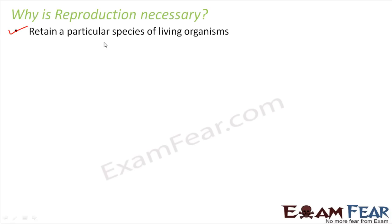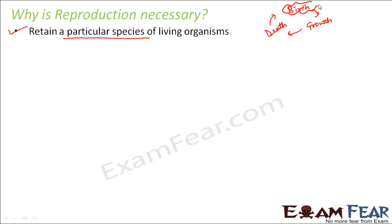However, reproduction is required for the survival of the entire species. If we want to retain a particular species, then reproduction has to happen. If all human beings stopped reproducing and no more human babies were born, what will happen? All those human beings existing today are not going to exist forever — there is this cycle of birth, growth, and death. If human beings are not reproducing, there will be no birth. Whichever number of human beings exist today, they will all die someday — maybe after 100 or 200 years — and then there will be no human beings left. The entire species of human beings would be gone. Without reproduction, the entire species would become extinct.